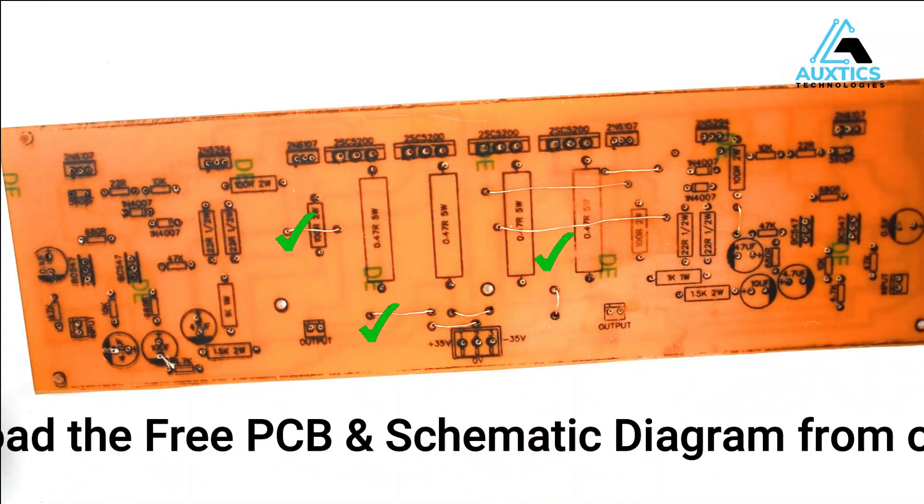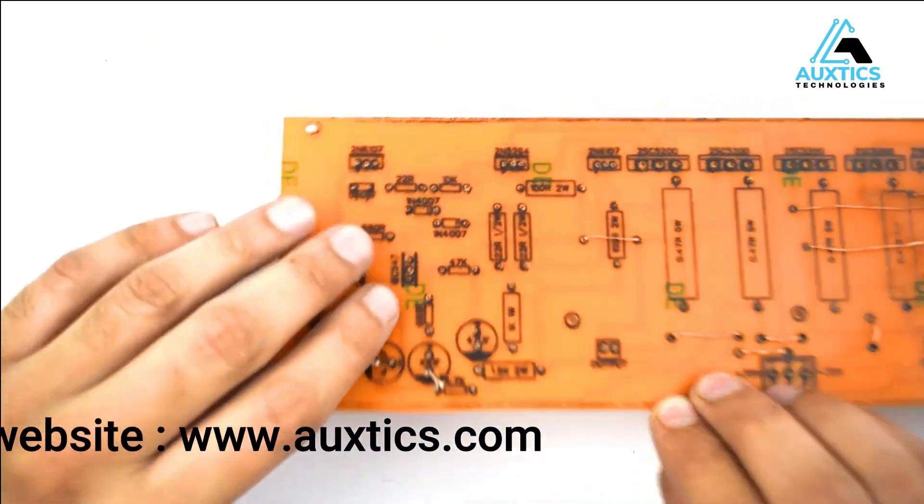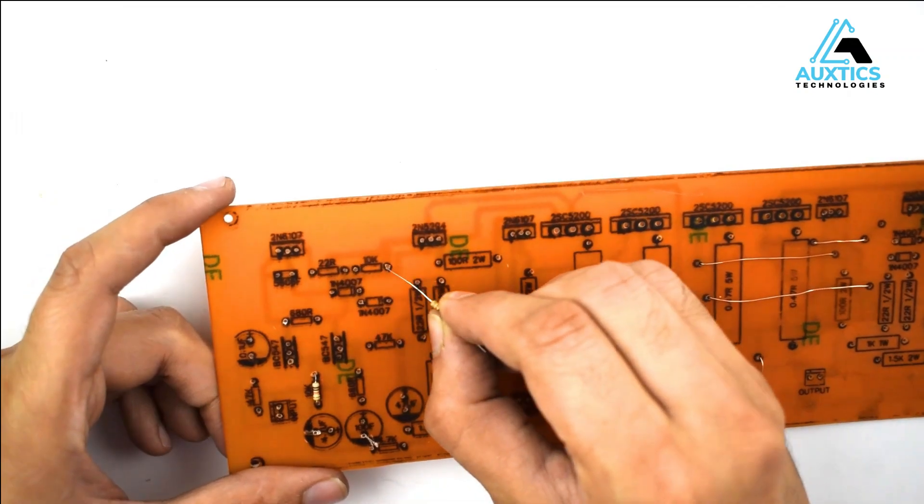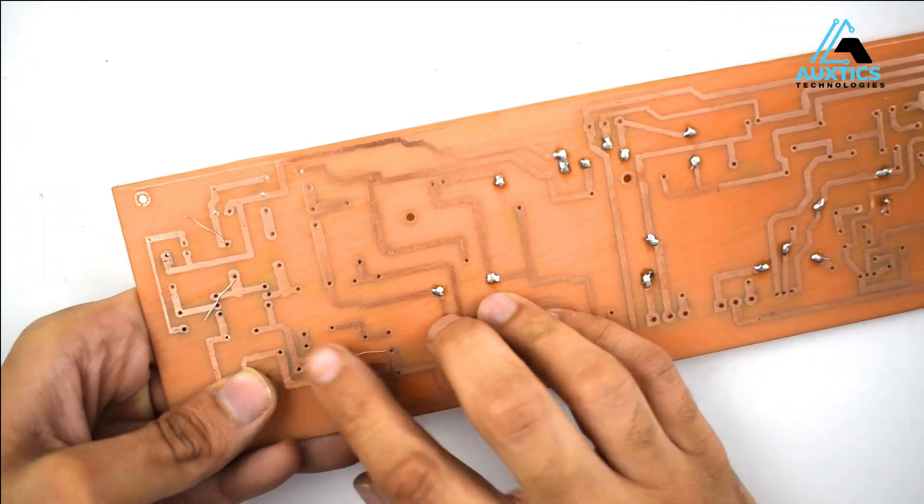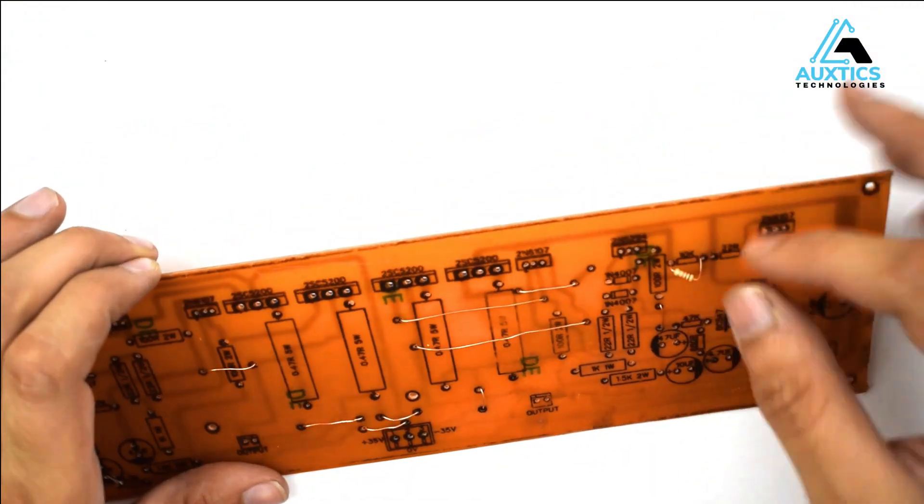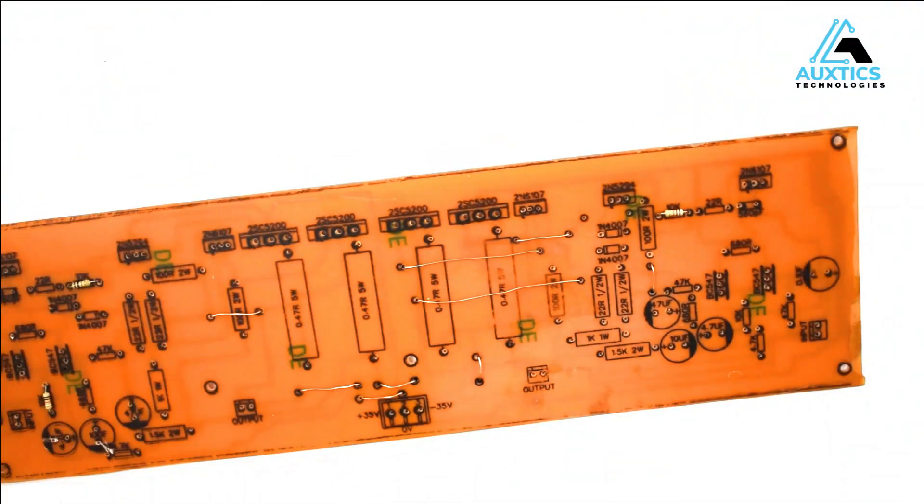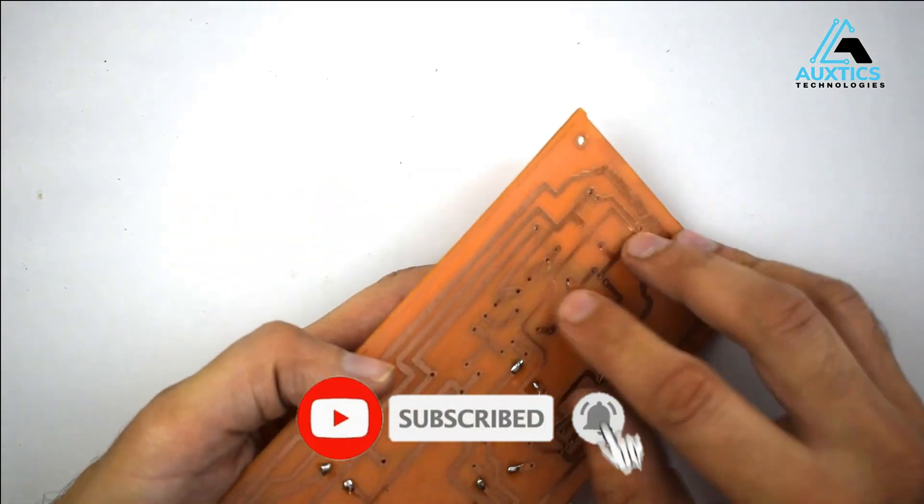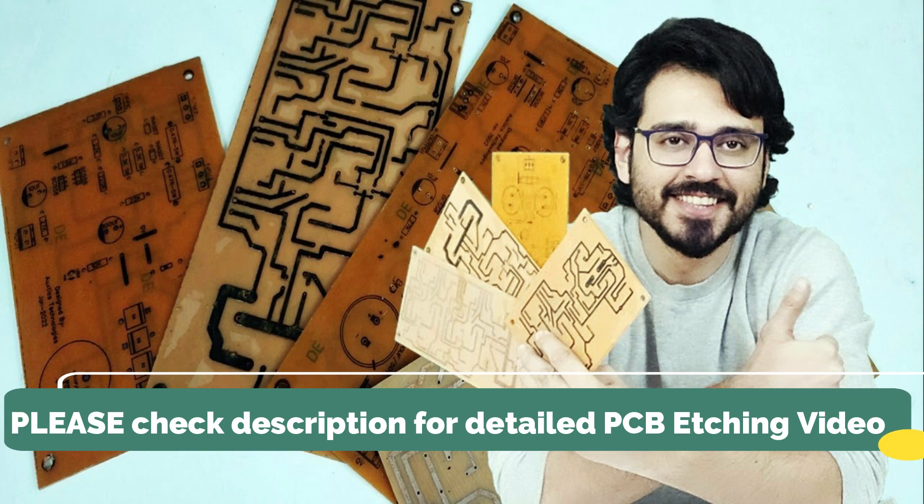So now all the jumper wires are soldered on the PCB. Now we will solder all the resistors starting from 10k. Similarly we will do it with the rest of the resistors and the components, as every part number is written on the PCB, so it's very easy for you to place all the components and solder them.